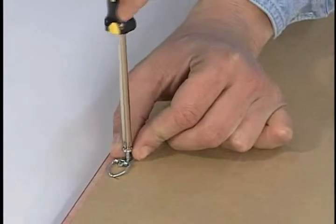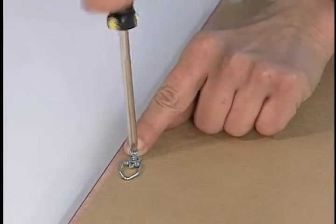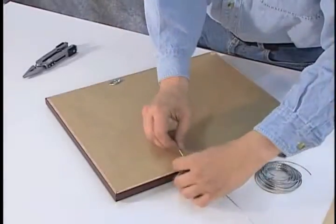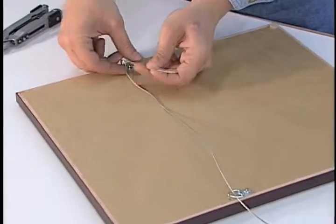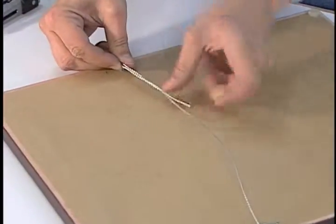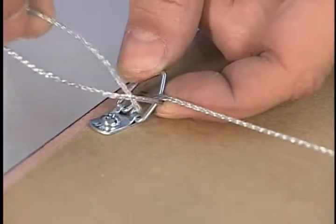Next, attach a ring hanger to each side of the frame at your marked locations. Finally, stretch hanging wire across the back of the artwork from ring hanger to ring hanger. Secure the wire at each end following the pattern shown.